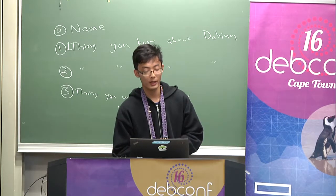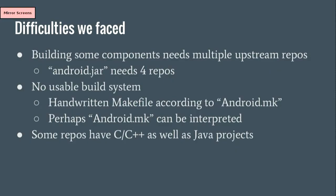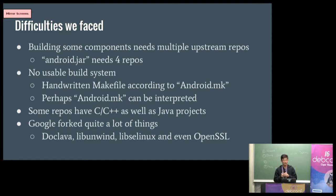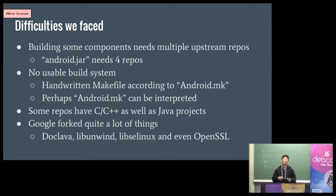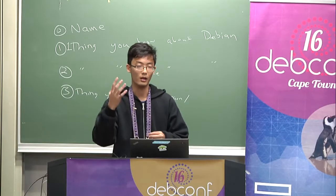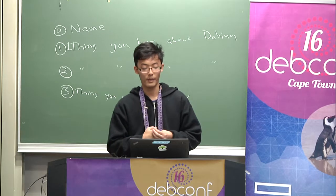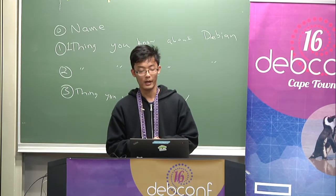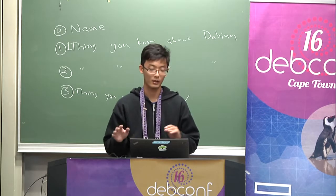Some Android repos have C++ projects as well as Java projects, so it's quite tricky to deal with a package with two languages. And finally, Google also forked a lot of third-party libraries and made some modifications — sometimes so big that you can't even build the project using the upstream libraries. So far we have packaged two upstream libraries modified by Google: libunwind and libselinux. They won't interfere with the existing libraries in the system. We also packaged Doclava, which is necessary to build Android.jar.